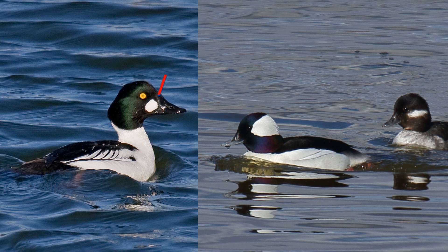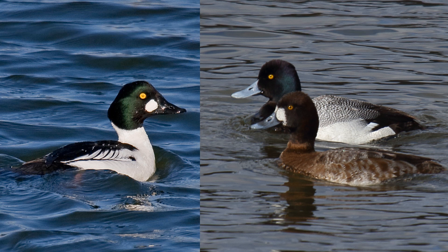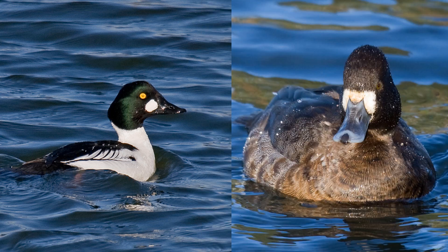Note that the white spot of the goldeneye is on the front of the face near the bill, below and in front of the eye. There is a large white wedge on the back of the head of the male bufflehead. The female bufflehead has a thick white line on the cheek to the back of the head. Male scaup, both greater and lesser, do not have any white on the face. The female scaup has a white crescent reaching around the bill, and note that it reaches over the top of the blue bill.